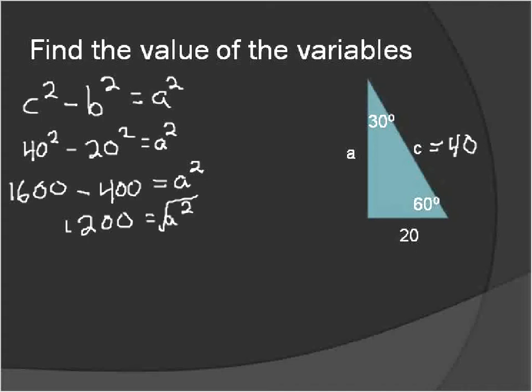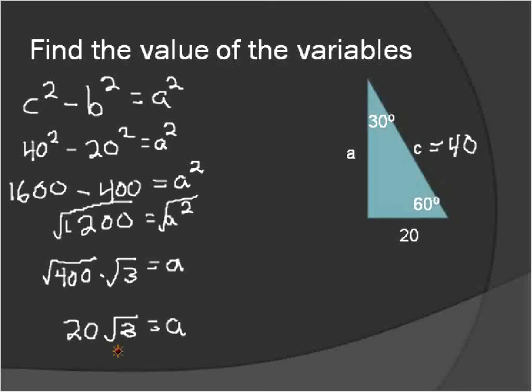We do some subtraction here. And then we're going to take, to solve for a, we take the square root of a squared, which gives us a, and then we take the square root of 1,200. 1,200, we're going to look for some perfect square factors. And 400 times 3 are the factors of 1,200, and 400 is a perfect square. So now what we can do is take the square root of 400, which is 20, times the square root of 3.